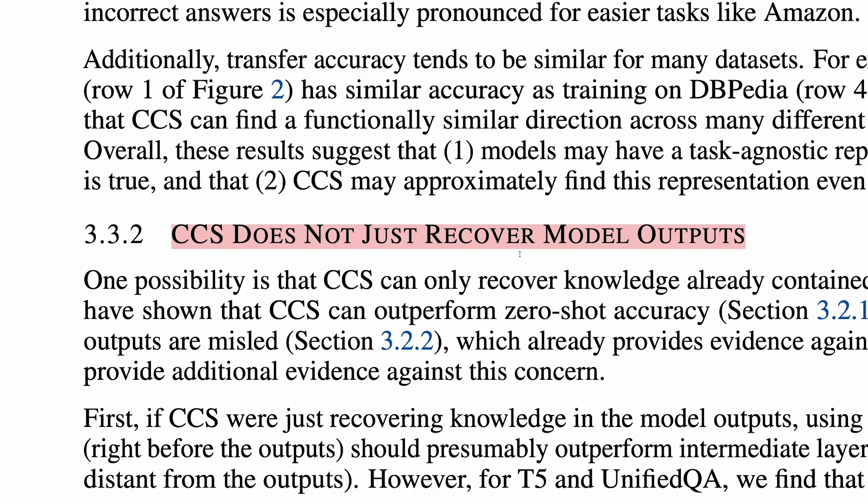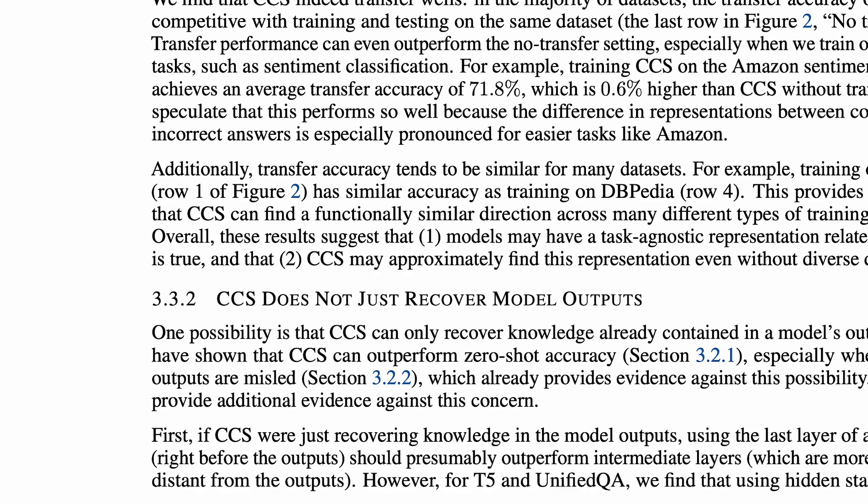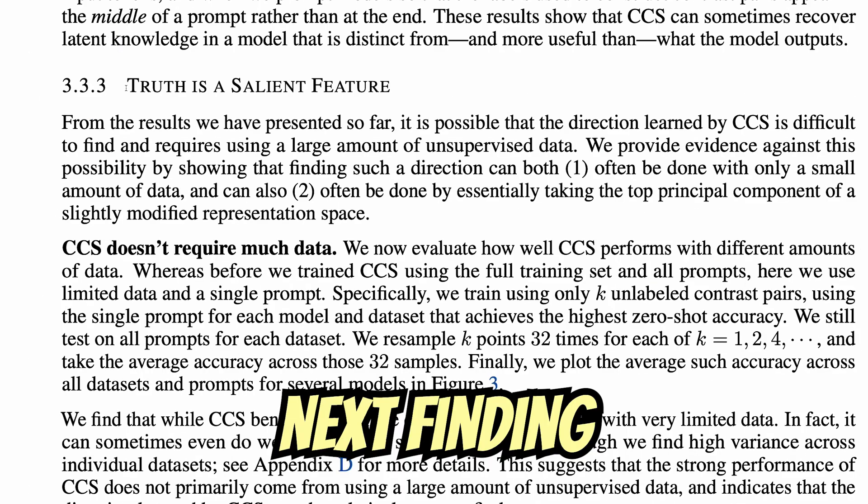CCS does not just recover model outputs. We've seen CCS can outperform zero-shot accuracy, so that's some evidence against the claim that it just recovers knowledge that could be found in the text outputs of the model. As further evidence, the authors also find that for some models, using hidden states in the middle of the network outperform hidden states at the end of the network when using CCS. If CCS only recovered knowledge that could be found in the generated text from the model, you'd expect the last layers to work best. Next finding.